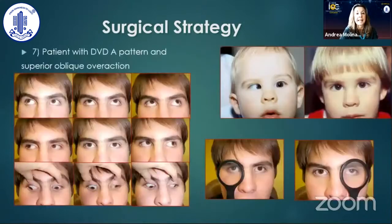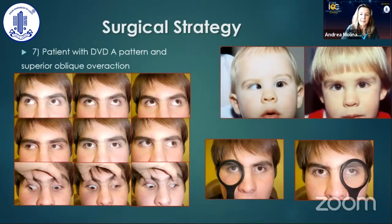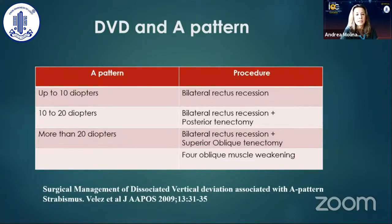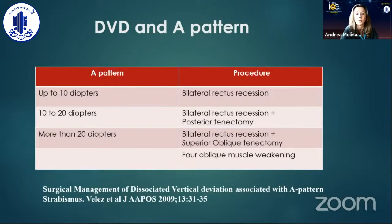Patients with DVD, A-pattern, and superior oblique overaction — like this patient operated for congenital esotropia who many years afterwards developed DVD — can benefit from different surgical strategies. I like the approach that Federico Vélez suggested in his papers: when the A-pattern is small, up to 10 diopters, bilateral rectus recession is enough; when the A-pattern is moderate, between 10 and 20 diopters, you can add a posterior tenectomy of the superior oblique tendon; and if the A-pattern is much larger, you can add a complete superior oblique tenectomy. Also, a four oblique muscle weakening procedure can be performed.